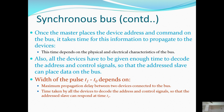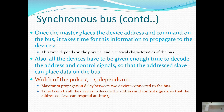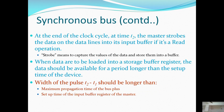Once the master places the device address and command on the bus, it takes time for this information to propagate to the device. This time depends on the physical and electrical characteristics of the bus. All devices must be given enough time to decode the addresses and control signals so that the addressed slave can respond. The width T1 minus T0 depends on the maximum propagation delay between devices and the time taken by all devices to decode the address and control signals.